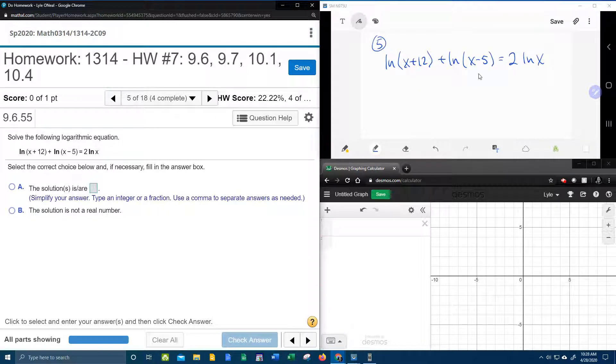All right, so I've got it written down up here in the right hand corner. Let's get started. First of all, I noticed that I do have natural logs all the way through, which is nice. And the two logs on the left are attached with addition. So that means that we can use the product rule and combine these two logs.